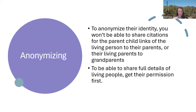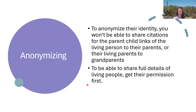If someone decides they don't want to be included, we shouldn't include them at all — we shouldn't still use them and anonymize them. But if they don't respond, we can go ahead and anonymize them and still include them in our research reports. That probably means you won't be able to share citations for the parent-child links of that living person to their parents, because that would compromise their privacy or anonymity. So there's a give and take: we want to show our evidence, but we don't have permission to show everything. To be able to share those full details, we definitely need to get their permission first.